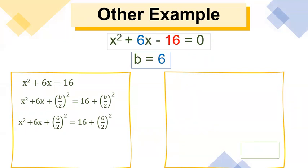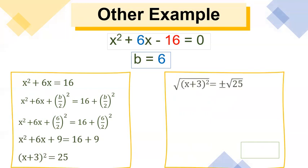We get x squared plus 6x plus 3 squared, so that gives us 9. And 16 plus 9, of course. Let's factor x squared plus 6x plus 9, and we get the quantity of (x + 3) squared is equal to — adding 16 plus 9 — that's 25. Let's extract the square: the square root of (x + 3) squared is equal to plus or minus the square root of 25, so that gives us x plus 3 is equal to plus or minus 5. Then x is equal to negative 3 plus or minus 5.